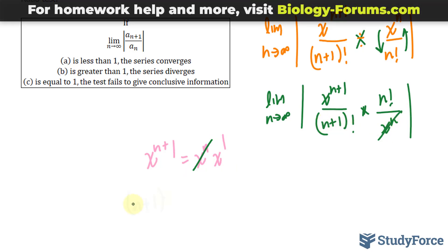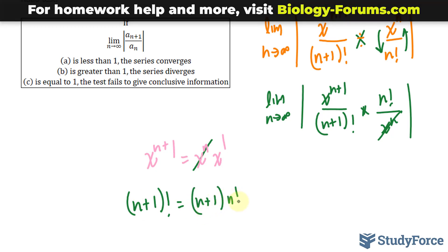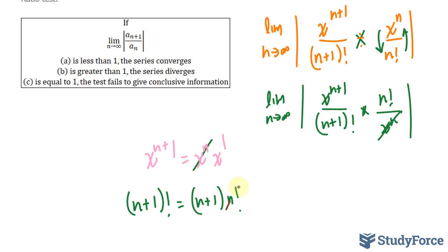n plus 1 factorial, if we expand this, gives us n plus 1 times n factorial. This means that this n factorial and this one cancels out, leaving us with the limit as n approaches infinity for the absolute of what was left, x to the power of 1, over n plus 1.